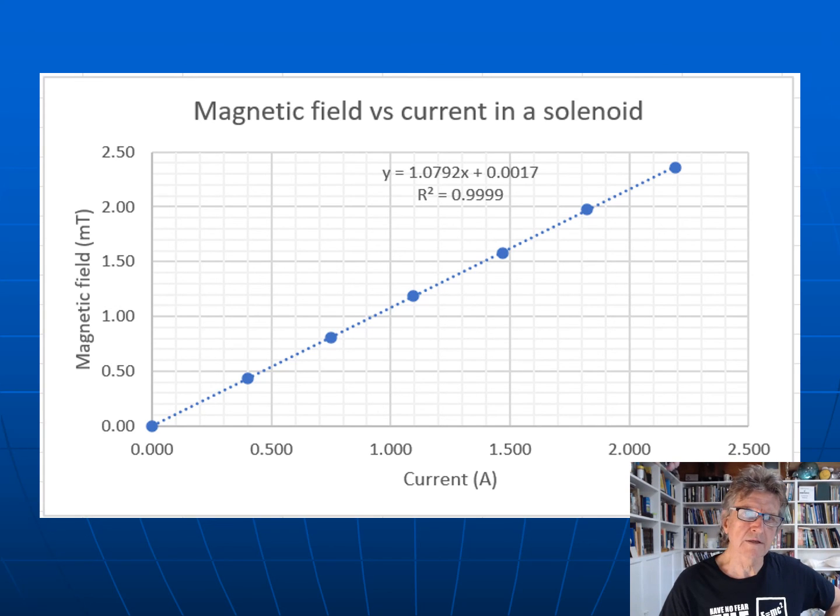If I move that sensor around inside the coil of the solenoid, it goes all over the place. So I find the strongest reading you can get is right at the end. Basically, the whole aim of that was to show that B is proportional to I, and it is beautifully. Okay, I'm finished, all done.